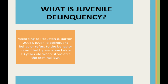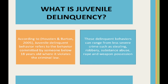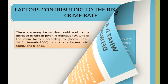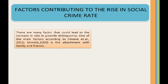Juvenile delinquent behaviour refers to the behaviour committed by someone below 18 years old where it violates the criminal law. This delinquent behaviour can range from less severe crimes such as stealing, robbery, substance abuse, rape and weapon possession. There are many factors that could lead to the increased rate in juvenile delinquency.